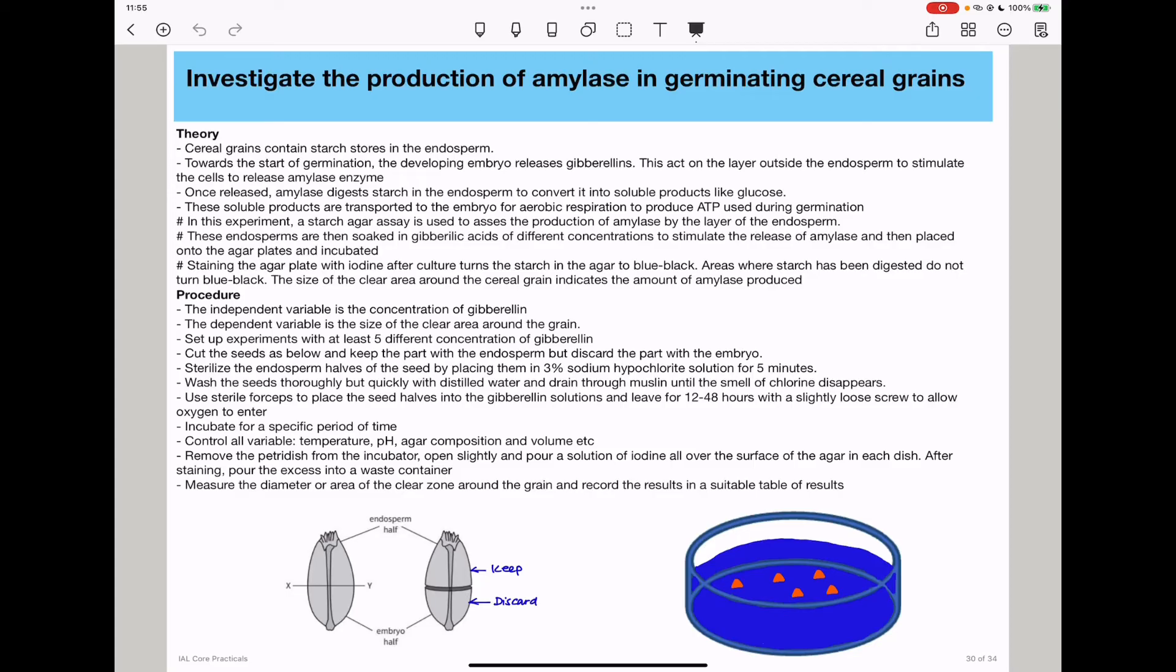Soak them for the same time, then wash the seeds thoroughly but quickly with distilled water. Drain through muslin until the smell of chlorine disappears. Use forceps to place the seed halves into the gibberellin solution and leave for 12 to 48 hours with a slightly loose lid to allow oxygen to enter.